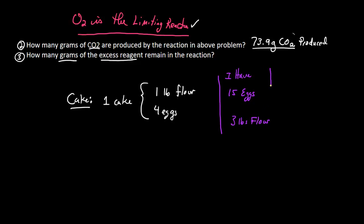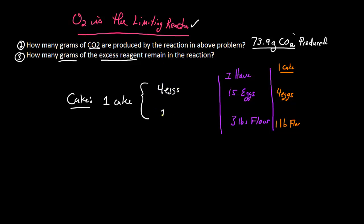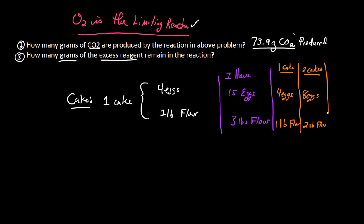If I make one cake, I use four eggs and one pound of flour. If I make two cakes, I use eight eggs and two pounds of flour. If I make three cakes, I use 12 eggs and three pounds of flour.